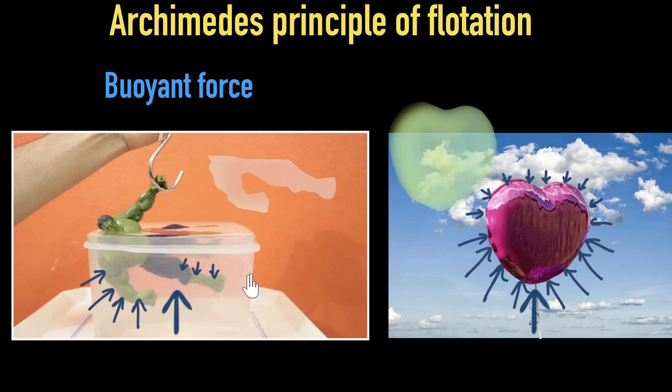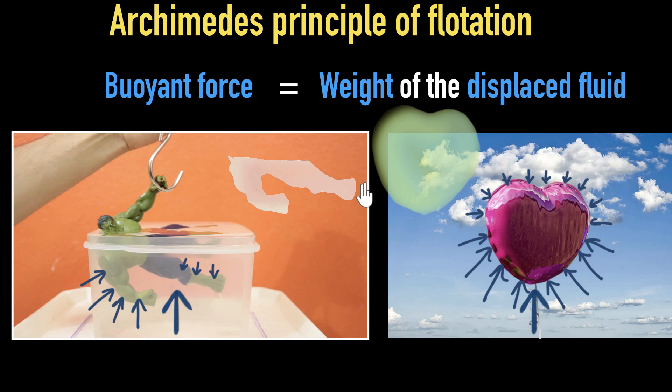And how do we calculate this buoyant force? Well, you figure out how much fluid gets displaced when you submerge these bodies. And then according to the Archimedes principle, the weight of this displaced fluid will equal the buoyant force acting on them.